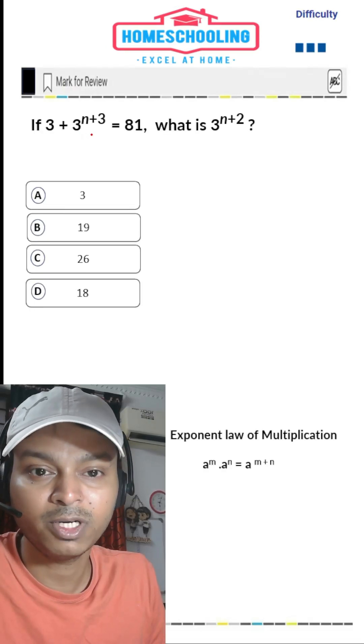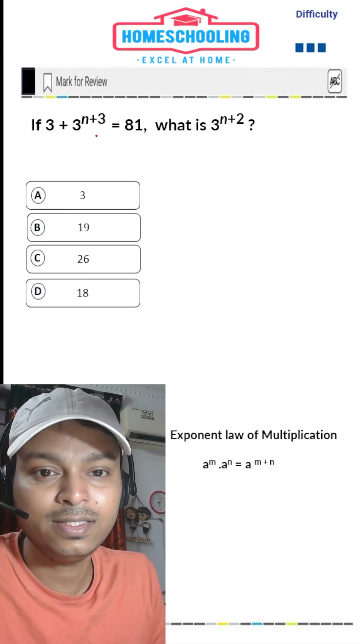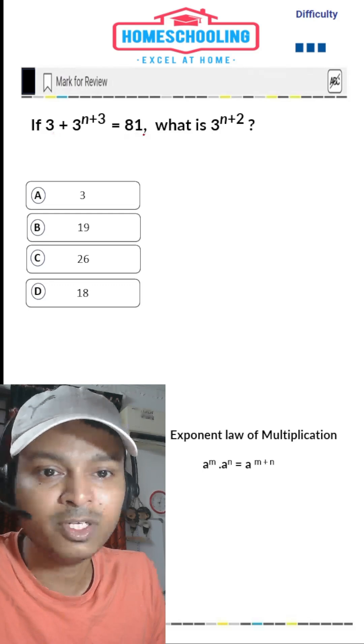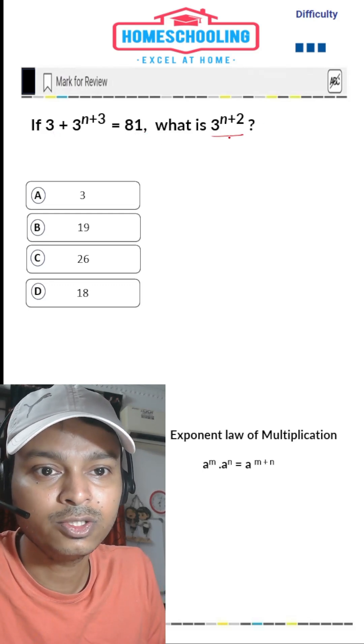This is one of the hardest SAT math problems, but if you know the trick, this is one of the easiest problems. Our equation is given to us and we have to find what is 3^(n+2).